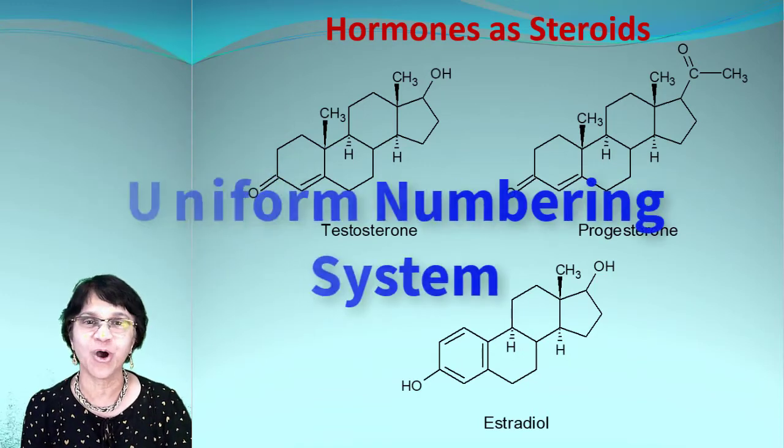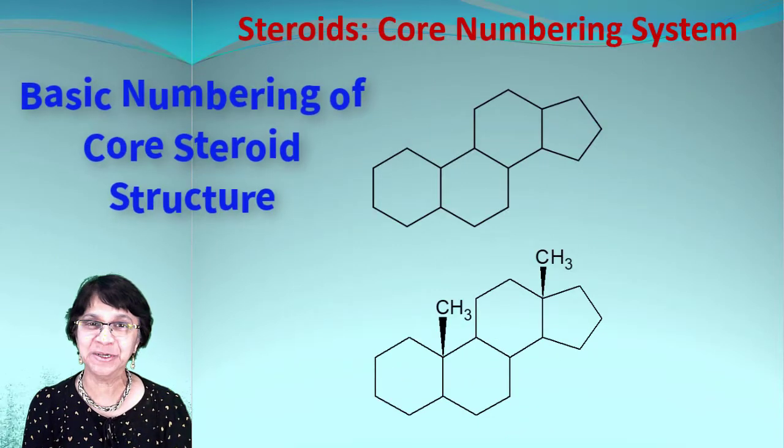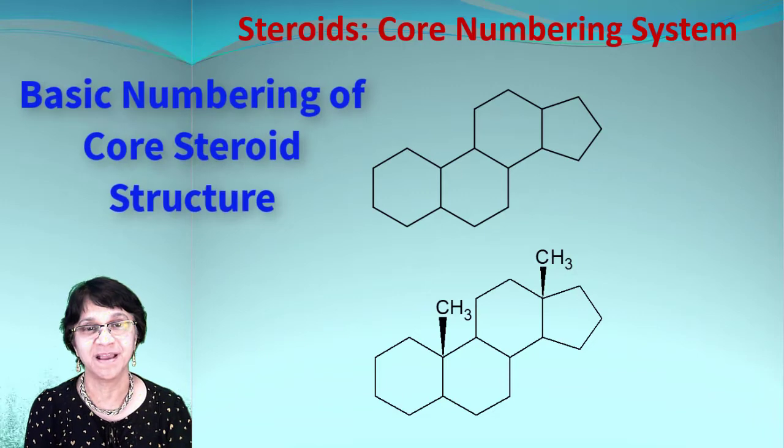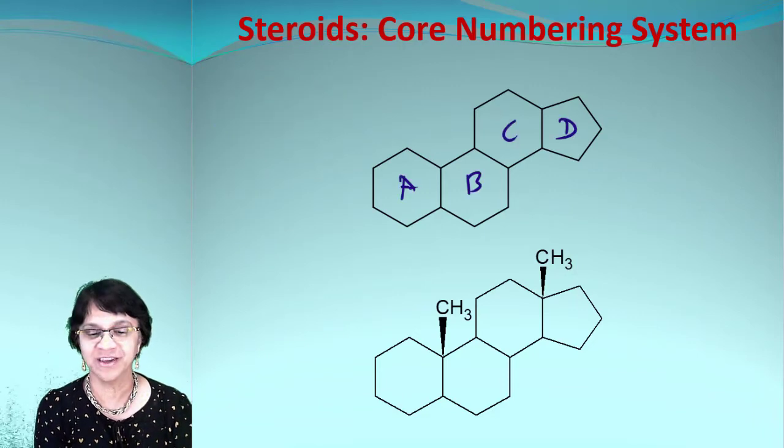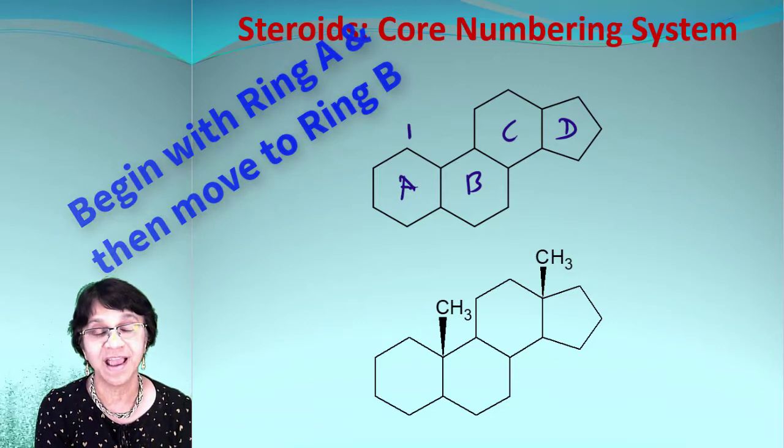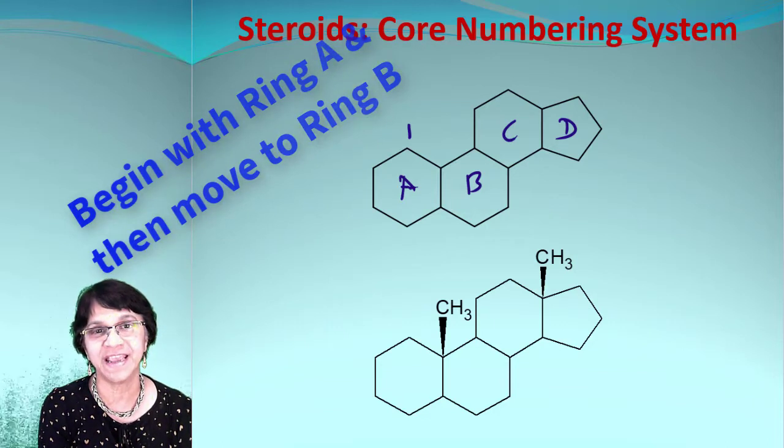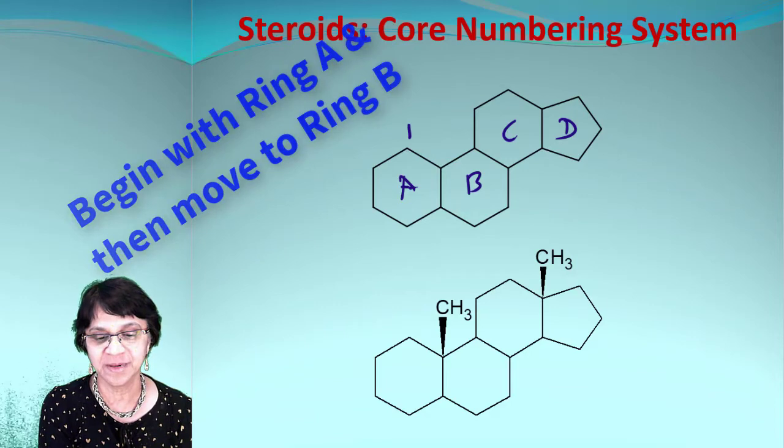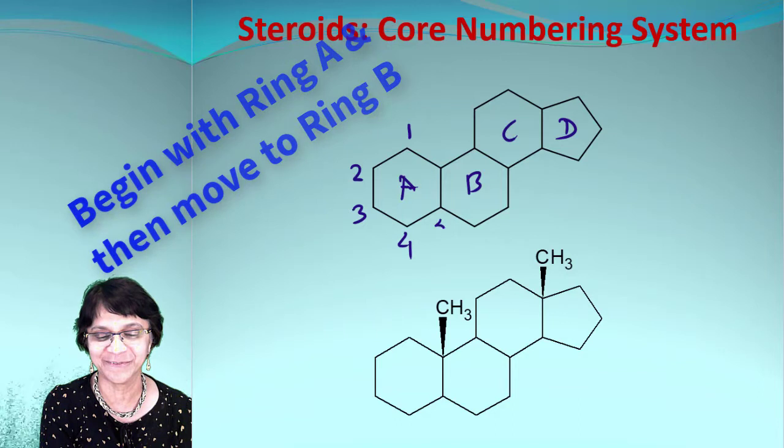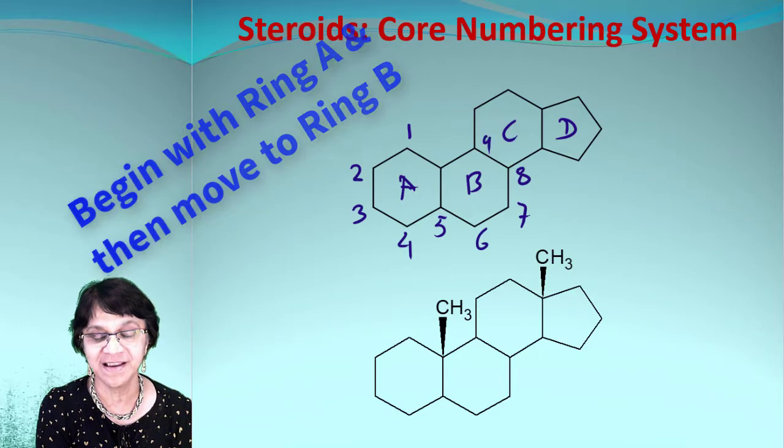Let's get started with the basic numbering of the steroid system. We begin with the topmost point for ring A. So that is number one, and then we're going to keep on moving and go around ring A and B. So I'll keep on watching. This will be two, three, four. Are you watching me? Five, six.